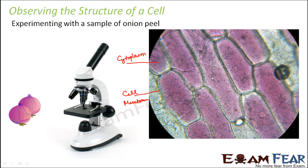You would also see some structures like dark spots. What are these? These are nothing but the nucleus. So roughly, these are some of the things which you can very easily see when you observe a cell under a microscope.